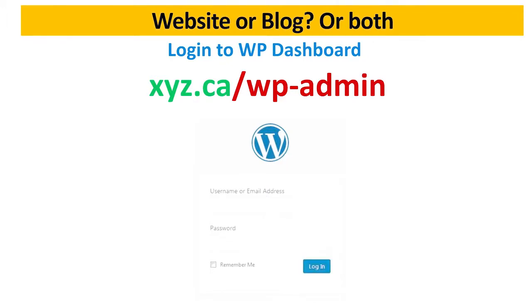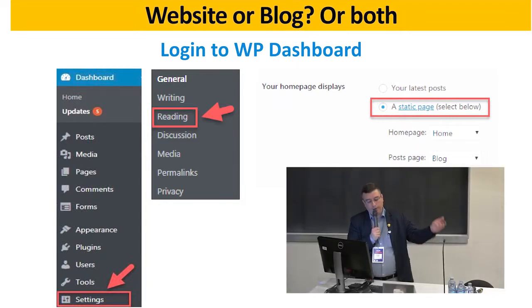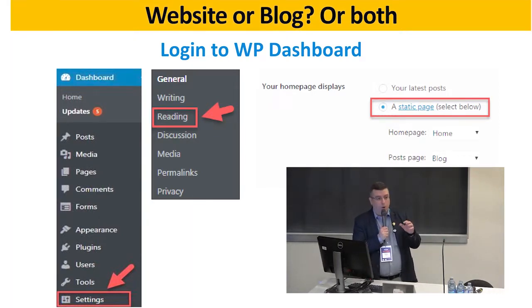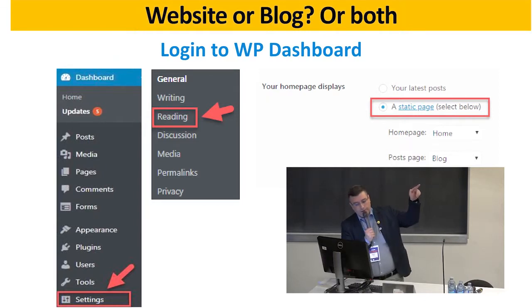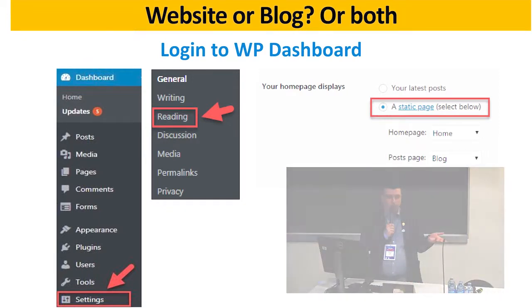When you go to /wp-admin, you'll see a login screen with username and password. Once logged in, you'll see your dashboard with Posts, Media, Pages, Comments, Appearance, Plugins, Users, and Settings. The first setting you need to do is go to Settings > Reading and tell WordPress if your website is going to be a static page, a blog, or both. You set your homepage to display a static page, choose a posts page if you want a blog, or leave it blank if you don't.